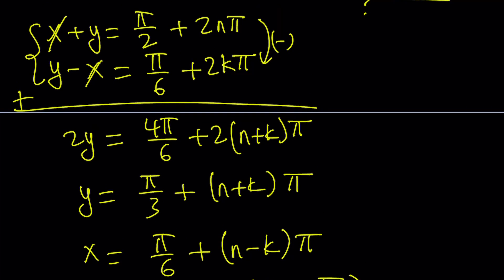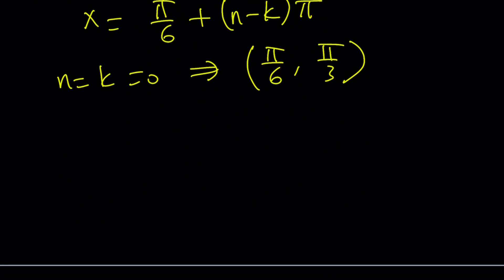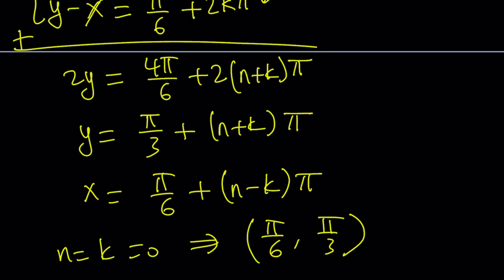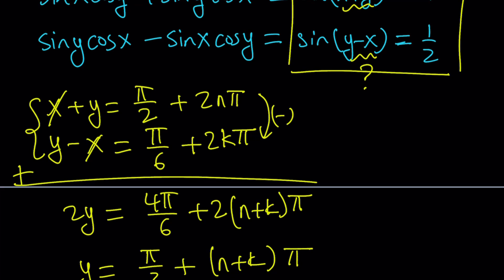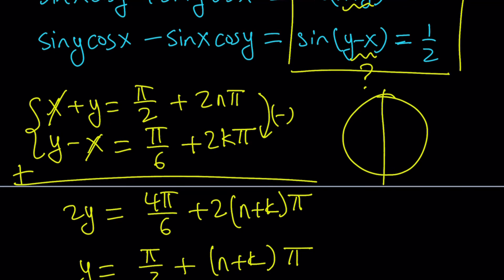So obviously, x plus y is going to be unchanged because there's only one angle, which is pi over 2. And then I'm just going to use the n again. And with the y minus x, though, we said that the sine of pi over 6 is 1 half. But you've got to remember, pi over 6 is like 30 degrees. By the way, there are two angles, first and second quadrant, whose sine is the same.